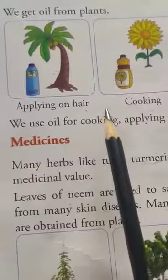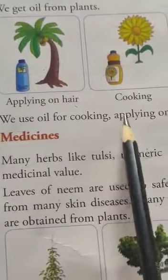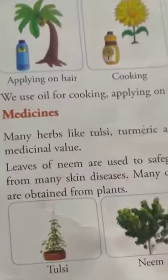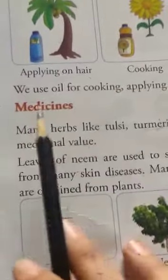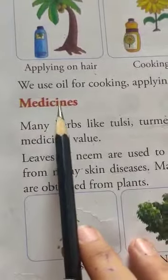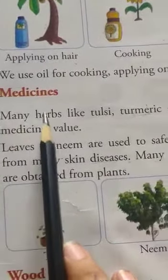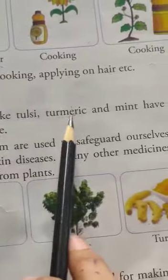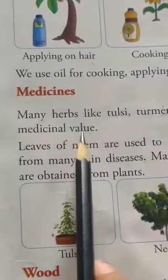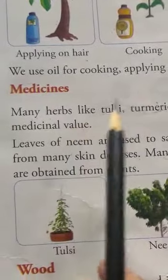Hum kis mein use kerti hai? Oil ko — we use it for cooking and applying on hair, balo mein lagane ke liye. Now next is medicines. M-E-D-I-C-I-N-E-S, medicines. Many herbs like tulsi, turmeric, and mint have medicinal value. We have learned about herbs in your last chapter.